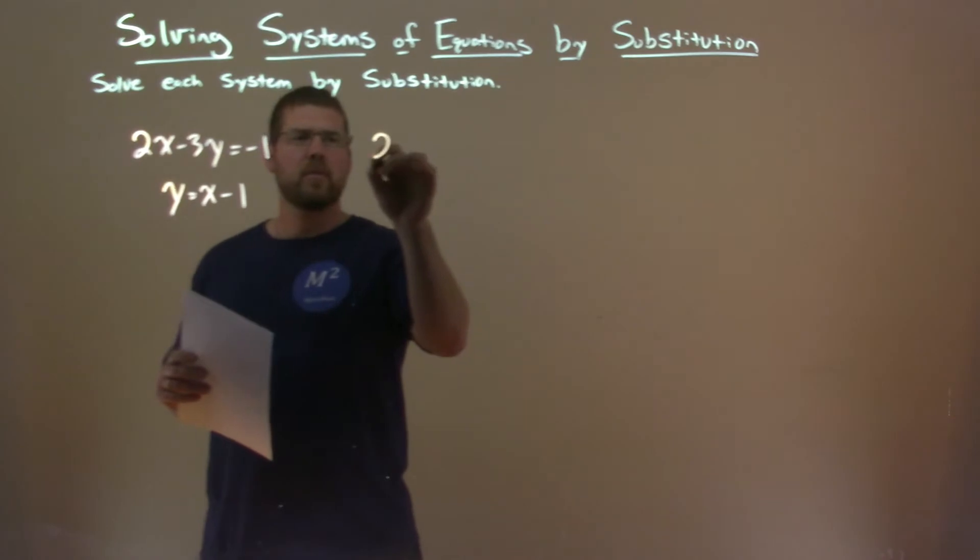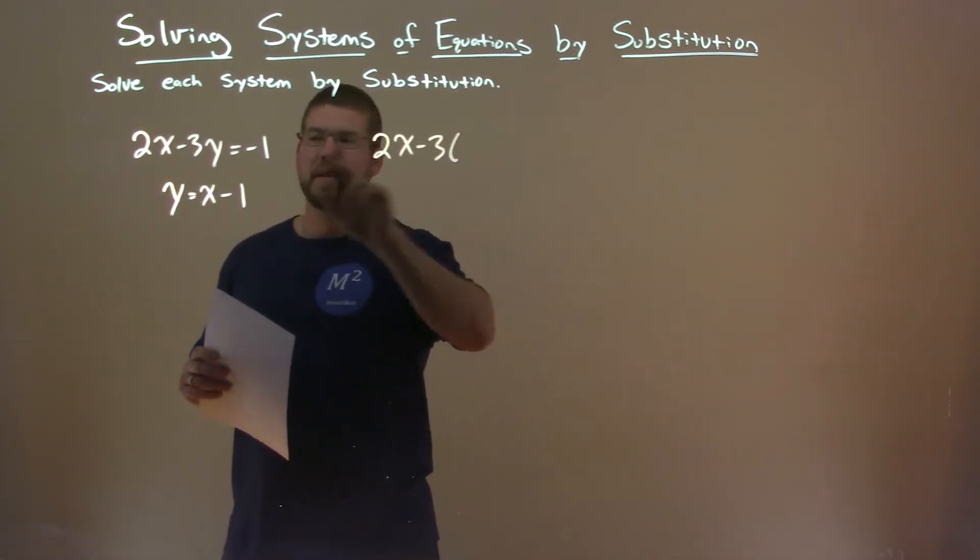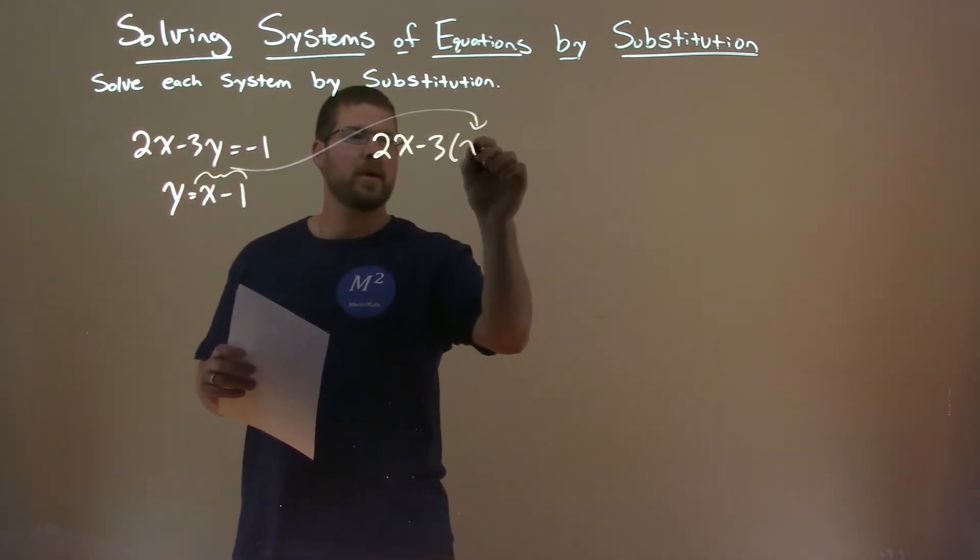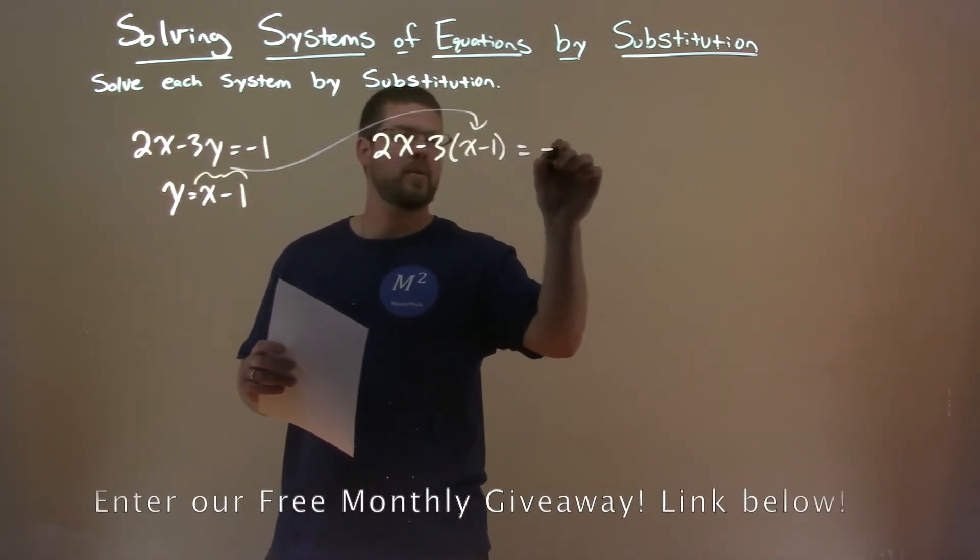I take the first equation, 2x minus 3, and then instead of that y, I'm putting this value in. Your x minus 1 here, and then we're equal to negative 1.